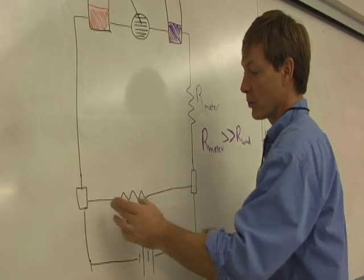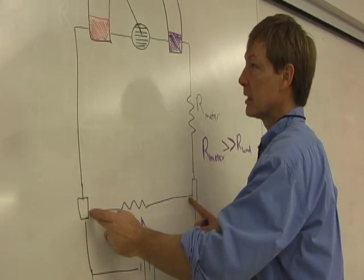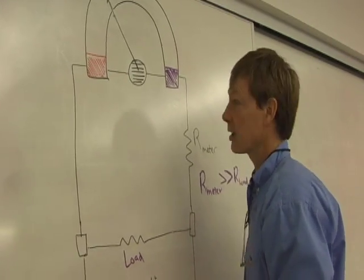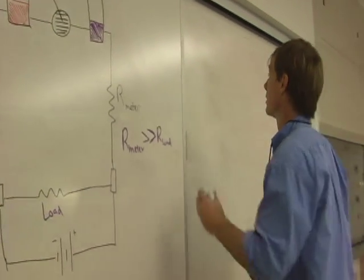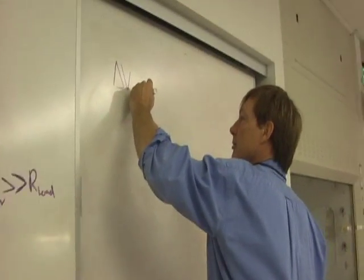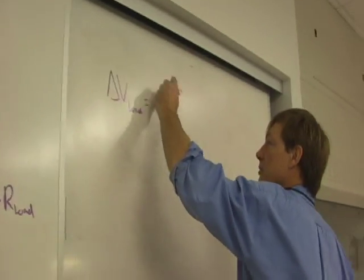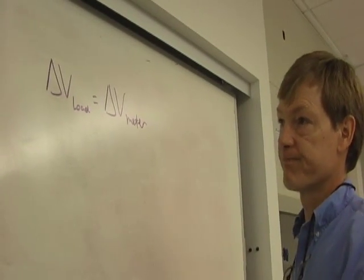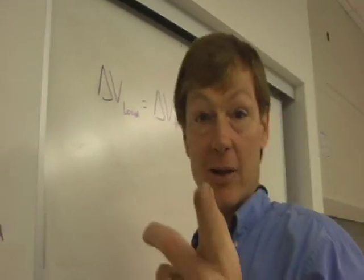But the nice thing is the voltage across the load is the same as the voltage drop across the resistor because they're in parallel. So the voltage across the load is equal to the voltage through the meter. Now, here's the clever bit.